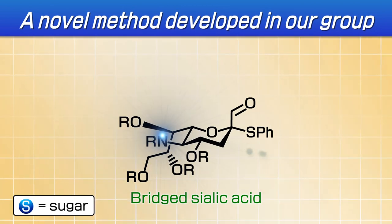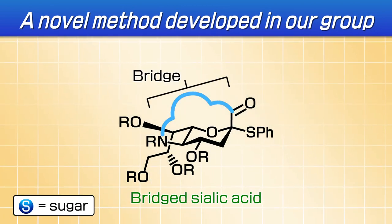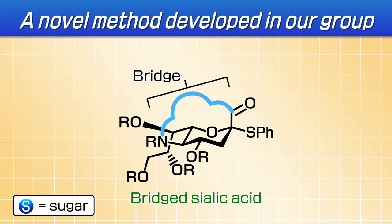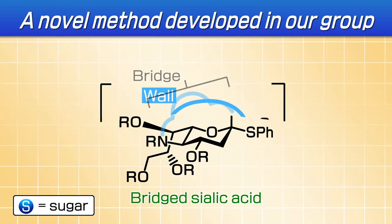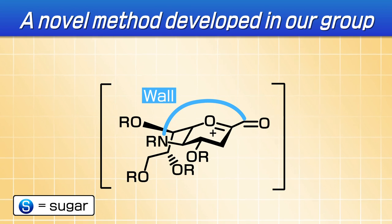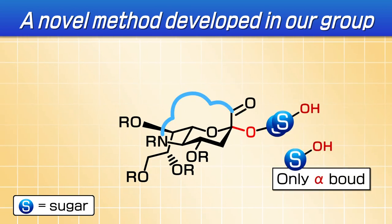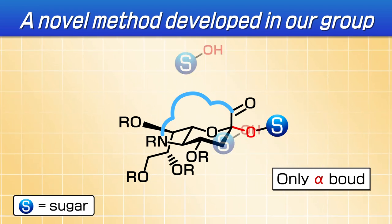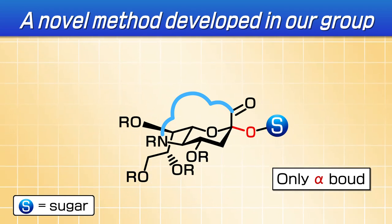We therefore developed a breached sialic acid, where the atoms on the upper side of sialic acid are connected by a carbon chain. This carbon chain acted as a wall to block vertical bonding, limiting interactions with sialic acid to the formation of alpha-glycosidic bonds.